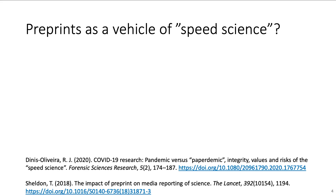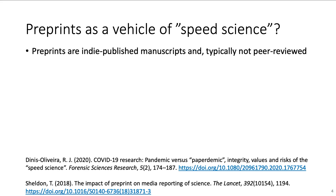In the last video we talked about preprints. Preprints are independently published manuscripts on open servers like arXiv and the Open Science Framework. Preprints are typically not peer-reviewed but can be cited in other preprints and papers, and they are usually searchable on Google Scholar. Similar to conference posters, the target group of preprints are usually other scientists, with the goal of fast and open exchange.